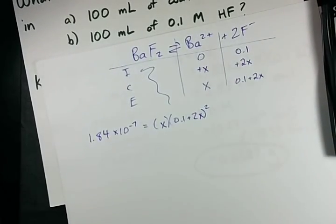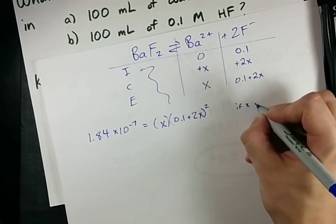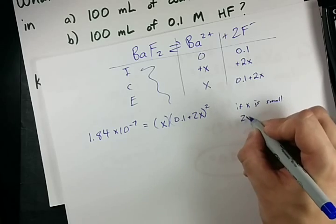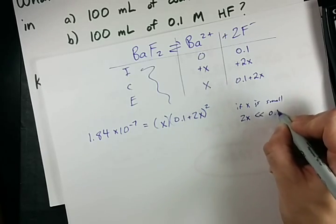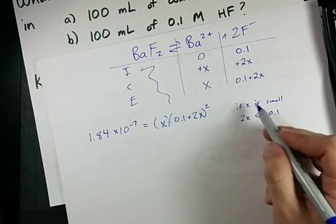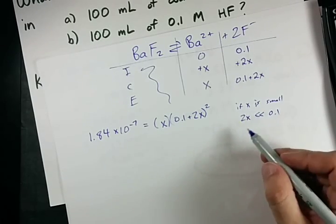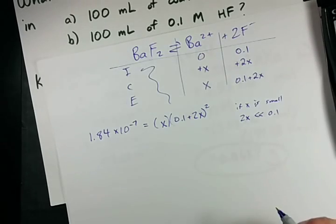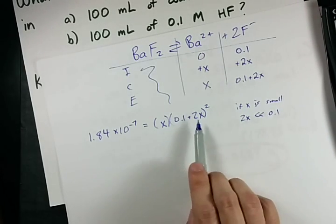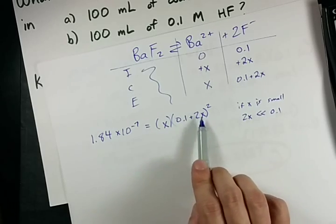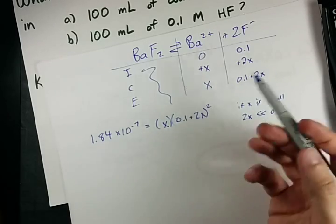So your equilibrium expression becomes 1.84 times 10 to the negative 7 equals your Ba2+ concentration times your F minus concentration squared. Now you may see where I'm going with this. If x is small, then 2x will be way, way less than 0.1. This is kind of like a rule of 100 style thing. You've probably seen it in acids and bases if you've done that unit.